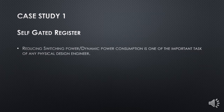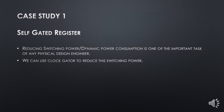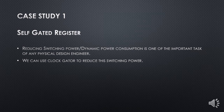Case study: the self-gated register. Reducing switching power — or dynamic power consumption — is one of the important tasks of any physical design engineer. We develop our chip with as minimal power consumption as possible. To do that, we can use a clock gater to reduce switching power, because the clock signal is constantly switching from 0 to 1. Majority of switching power comes from the clock signal. Whenever we don't need some part of the design to work, we disable the clock to that part, which reduces switching.